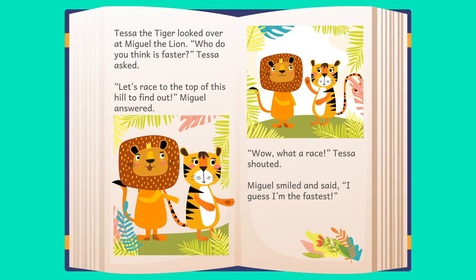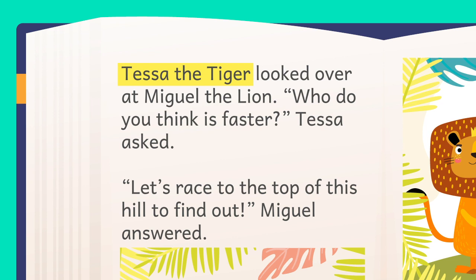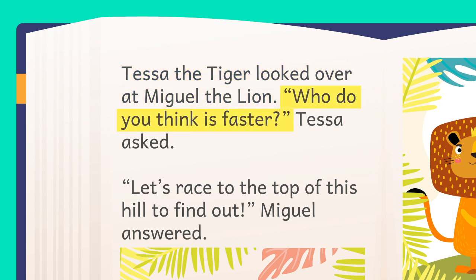Let's look at dialogue in a story. Tessa the tiger looked over at Miguel the lion. "Who do you think is faster?" Tessa asked.